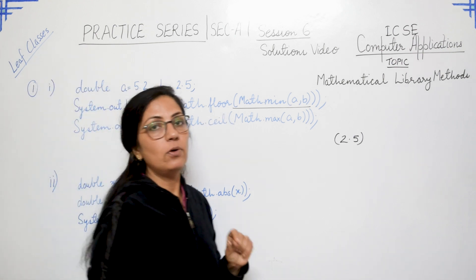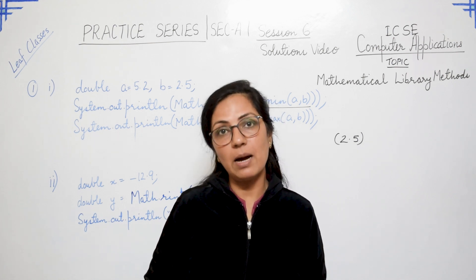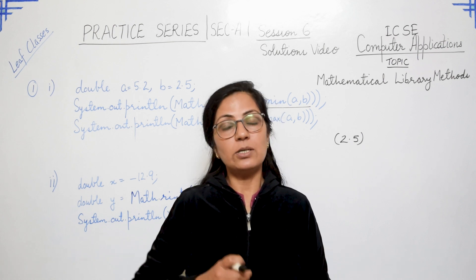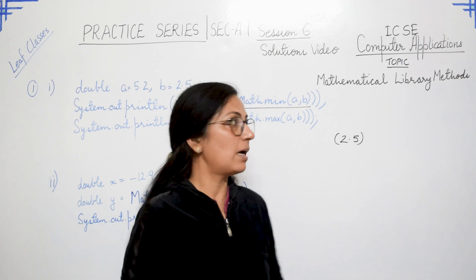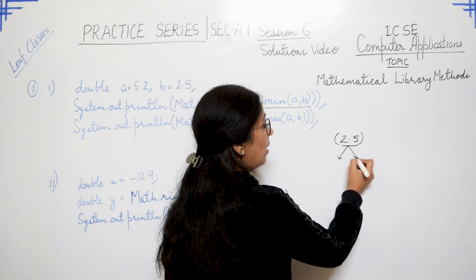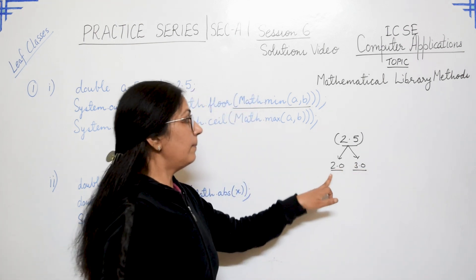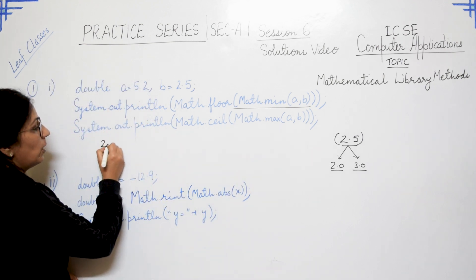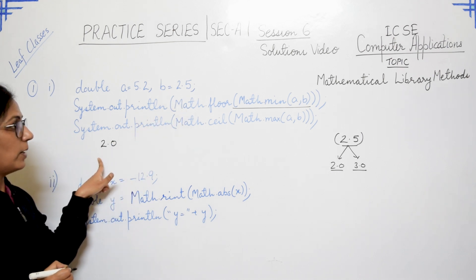Math.floor returns the nearest lowest integer in double type. Floor means downwards — it returns the nearest lowest integer but the return type is double. So for 2.5, the two nearest integers are 2.0 and 3.0, and Math.floor returns 2.0. So the output of the first statement is 2.0.